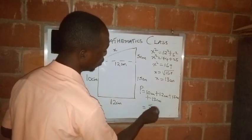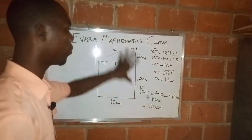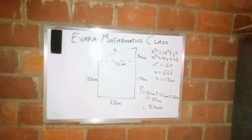If you add up all this, you get 50 centimeters. This is the perimeter of this entire shape. Thank you.